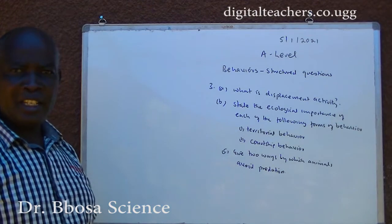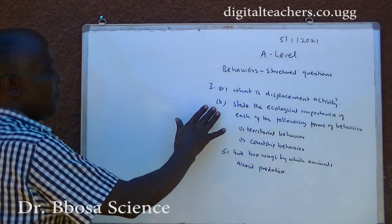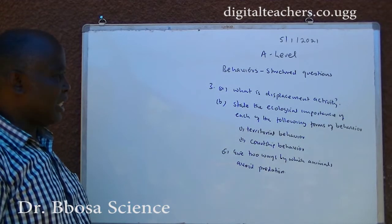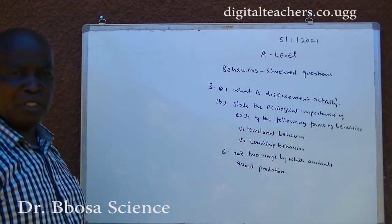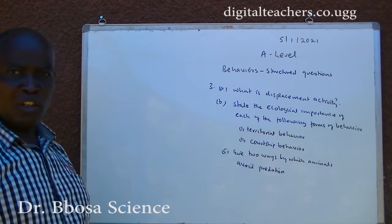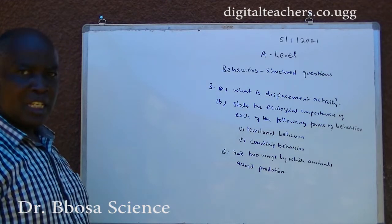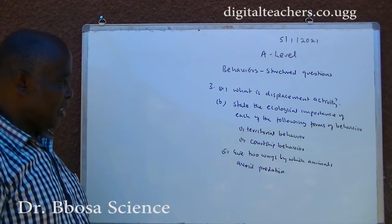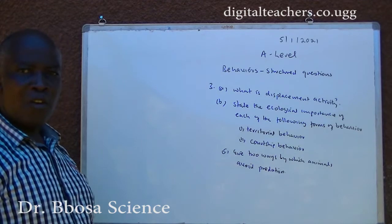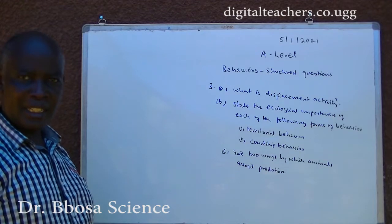Number 3 A. What is Displacement Activity? B. State the clinical importance of each of the following forms of behavior: 1. Territorial behavior. 2. Courtship behavior. C. Give two ways by which animals avoid predation. You can pause and answer.